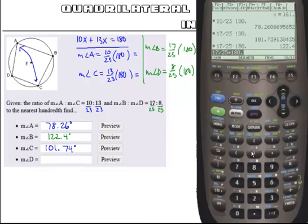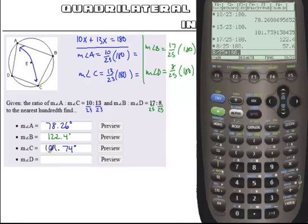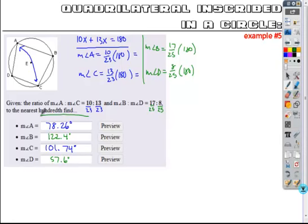And I can find my angle D by taking, I'm just going to change this 17 to an 8. Everything else remains the same. I get 57.6. And so these would be my designated angles.